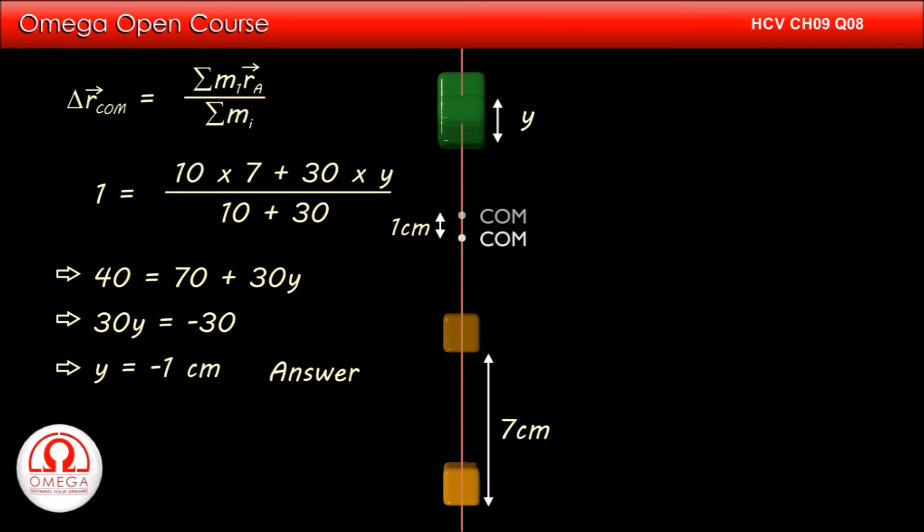The minus sign here signifies that the block has to be moved in direction opposite to the direction of motion of the first block.